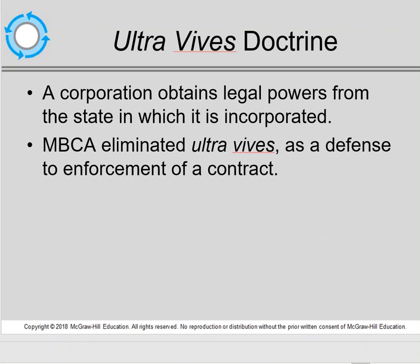Corporations historically had to contend with what's called ultra vires — a Latin term meaning a transaction that was beyond the corporation's powers, based on either the Articles of Incorporation or state laws where they incorporated. Thus, if you did anything that violated that, the transaction was void. Traditionally, corporations would use the ultra vires doctrine to avoid a contract that looked unattractive because of change of conditions. However, modernly, the MBCA eliminated ultra vires as a defense for the enforcement of a contract.